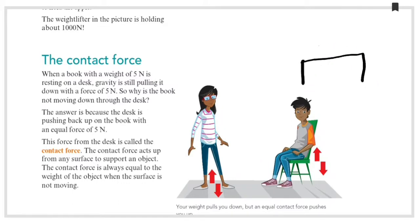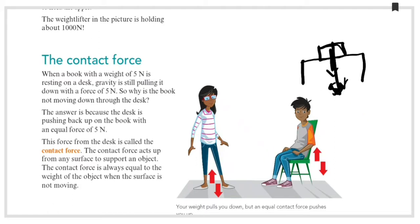The book has a weight of 5 Newtons, and gravity is pushing it downward with 5 Newtons. But why is the book not moving down? The answer is the desk is pushing back up on the book with an equal force of 5 Newtons.